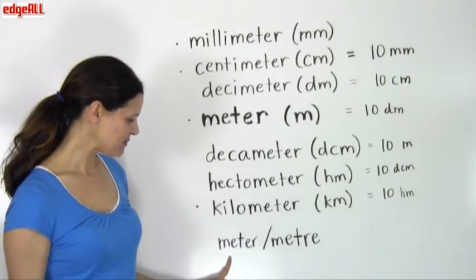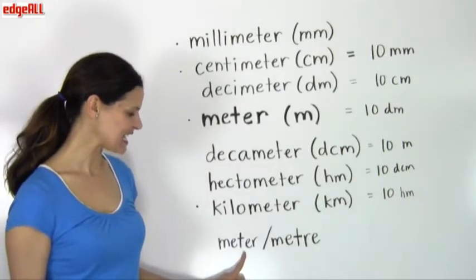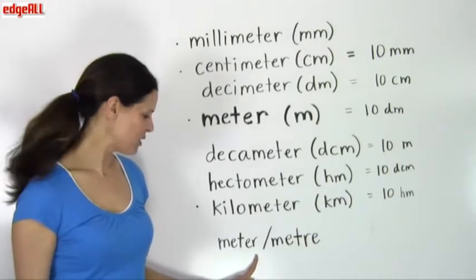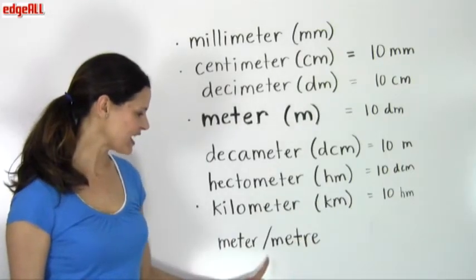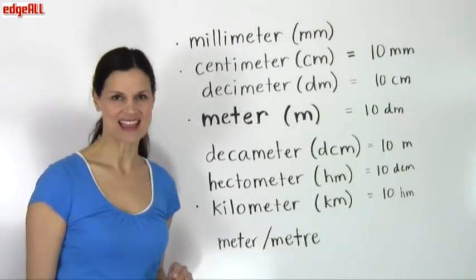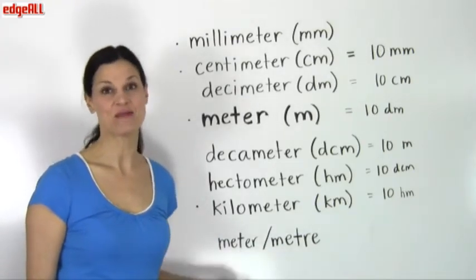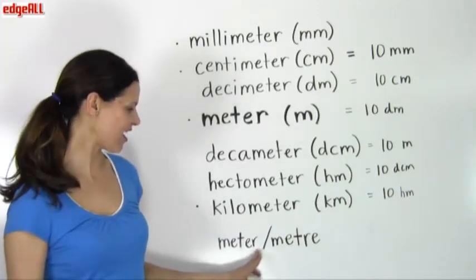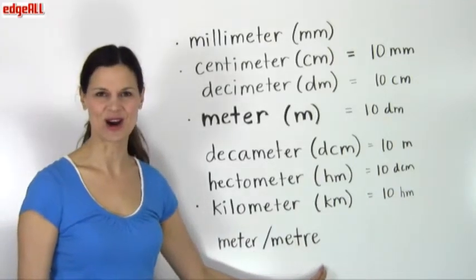Sometimes you'll see meter written M-E-T-E-R, mostly in the United States, and in other countries you might see it written M-E-T-R-E. Both ways are pronounced meter, and they're both correct, with the E-R or spelled with an R-E.